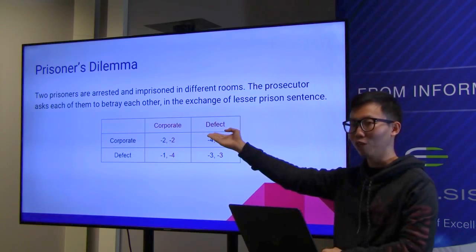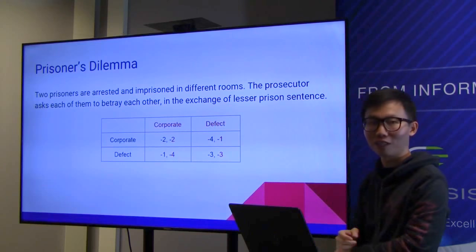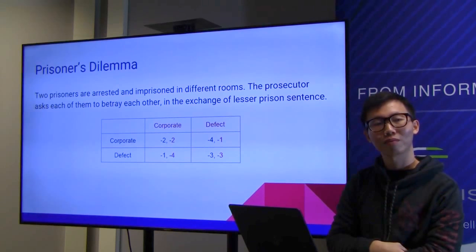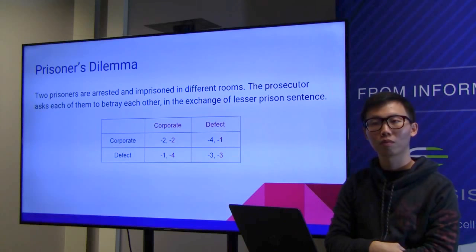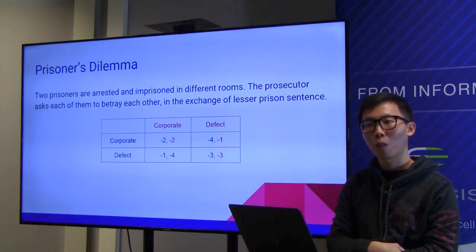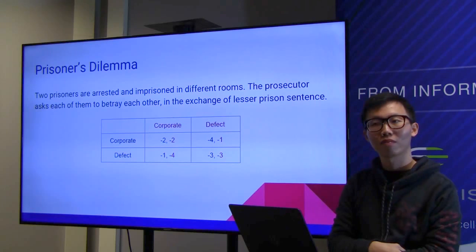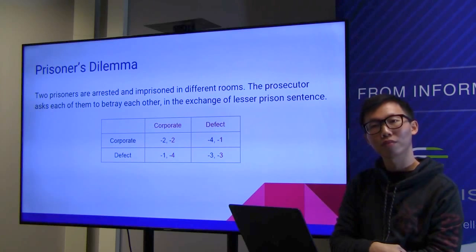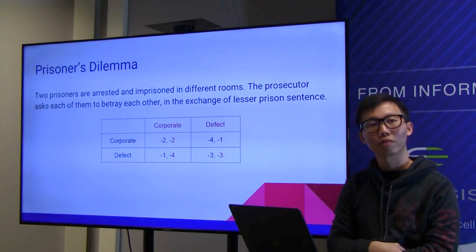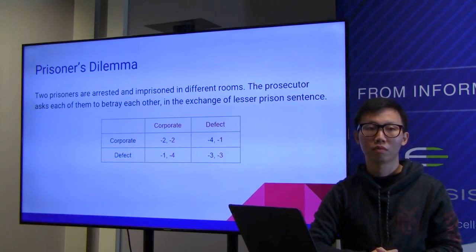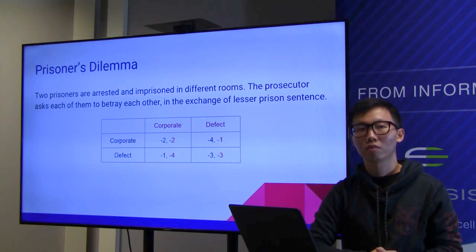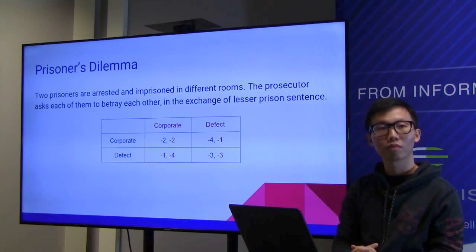Which card would you choose — cooperate or defect? A real-world example is the American legal system's plea bargain, where you tell on the other person involved in the crime in exchange for a lesser sentence. In the U.S., a large number of cases result in plea bargains, showing that defection is very common in practice.